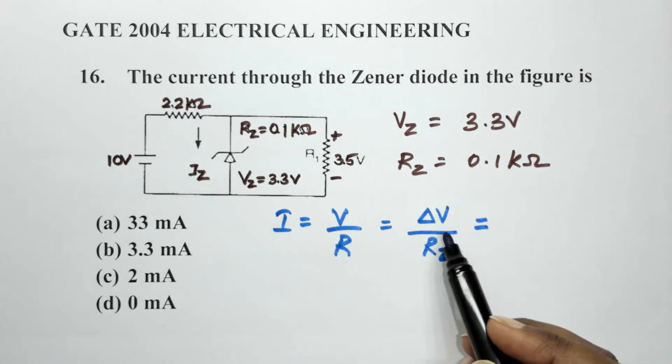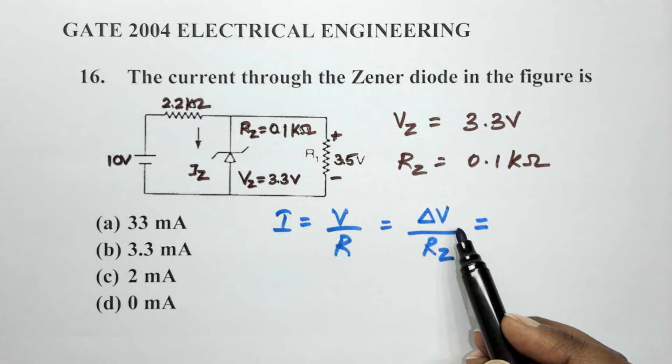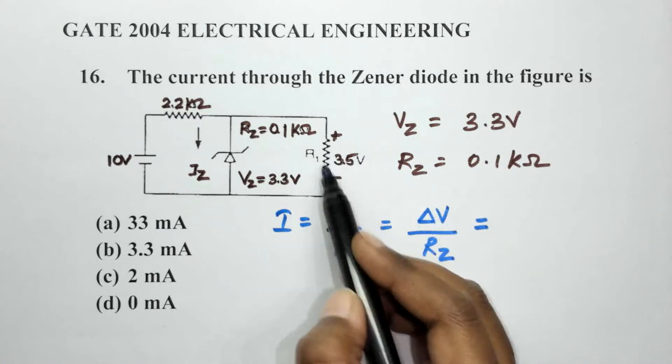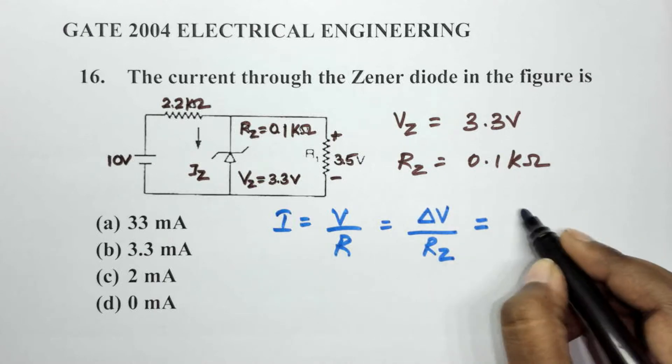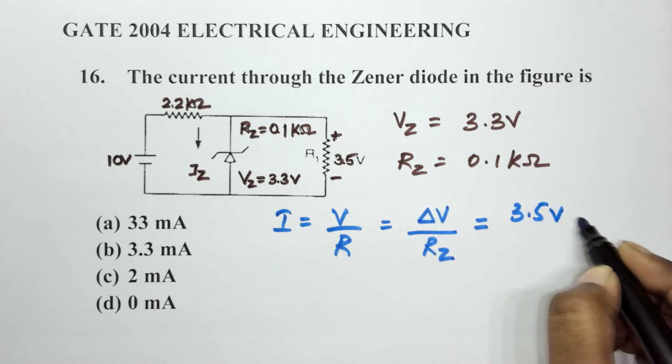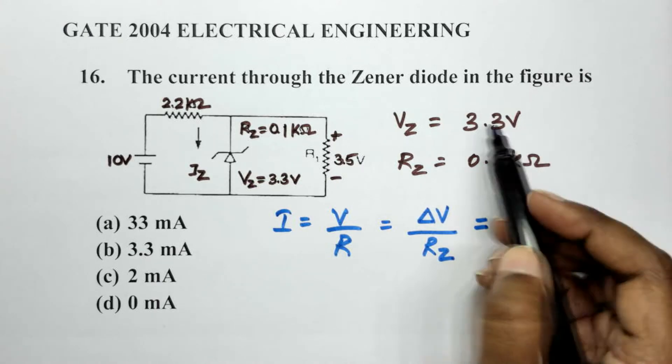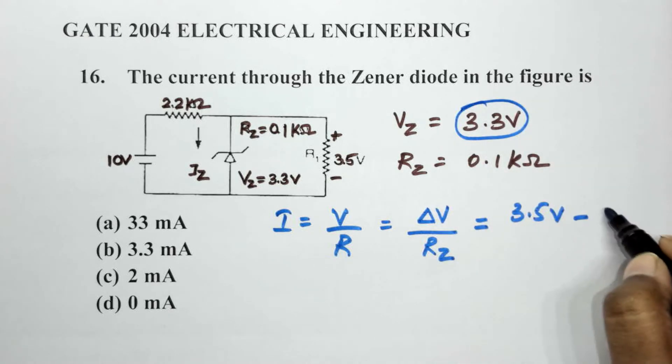So delta V is the difference of the two voltages over here, which is 3.5 volts minus the voltage Vz, divided by Rz.